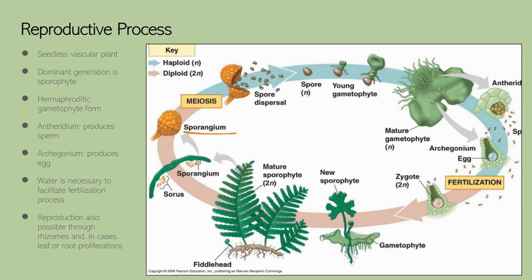We'll get started on the reproductive process. This plant is a bit interesting as its dominant generation is the sporophyte — the sporophyte is what we're familiar with seeing when we look at a frond. It reproduces by spore dispersal rather than seed or cone dispersal as we see in angiosperms or gymnosperms. If we zoom in on the back of the frond, we'll see these little spore pockets — a collection of spore pockets is referred to as a sorus. One individual spore pocket is a sporangium, and they are in these globe-like structures. Once they're in good humid conditions, they'll release the spores.